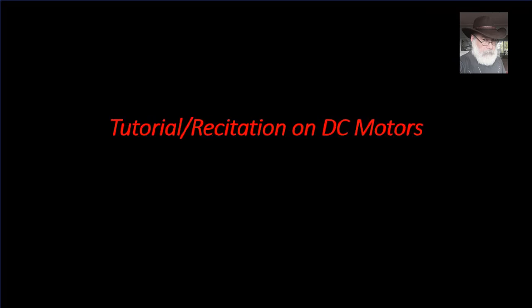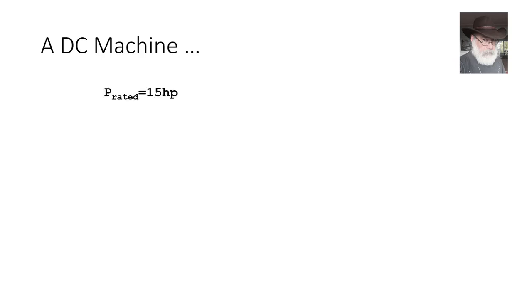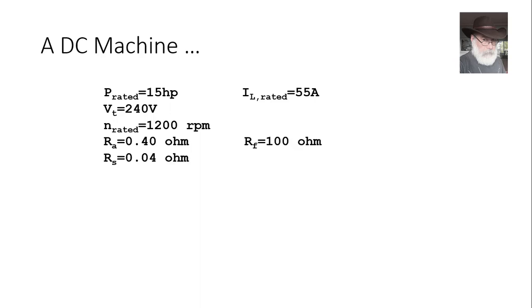Hello and welcome back to our series on electrical engineering. Tonight is a tutorial and recitation on DC motors for my third-year students here at UBC. The exercise begins with a DC machine rated for 15 horsepower, terminal voltage 240 volts, rated speed 1200 RPM, and rated line current 55 amperes. The values of the resistances of the field coil, the armature, and the series excitation coil are given.